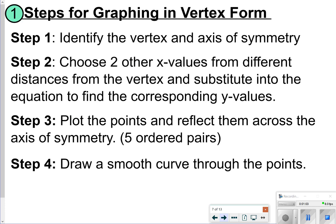New things we're going to write down are these four steps — this is how we can graph using vertex form. Step one: identify the vertex and the axis of symmetry. Just remember the vertex is (h, k) and axis of symmetry is where x is equal to h. Step two: choose two other x values at different distances from the vertex and substitute into the equation to find what y would be equal to. This is essentially what we did many chapters ago where we made an x and y table and then plotted points.